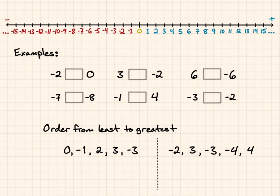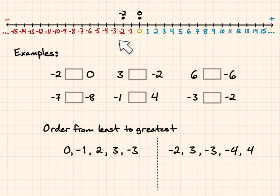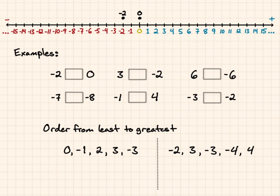If I'm comparing negative 2 and 0, I'll put negative 2 and 0 on the number line. I see that 0 is greater, so the symbol is going to be: negative 2 is less than 0. My symbol is going to open towards 0.